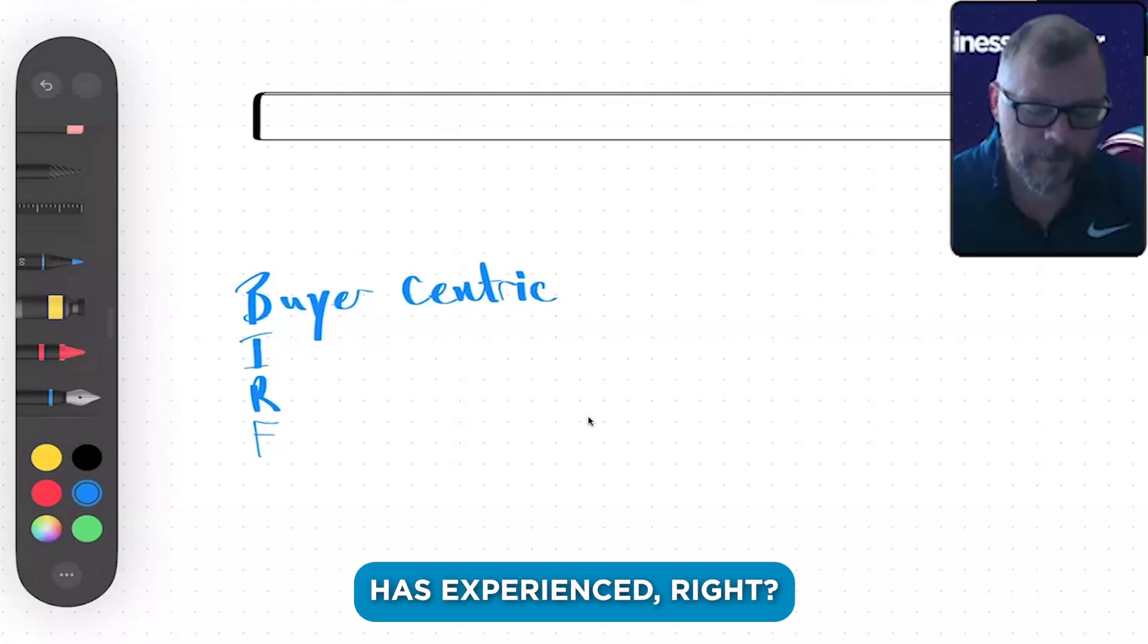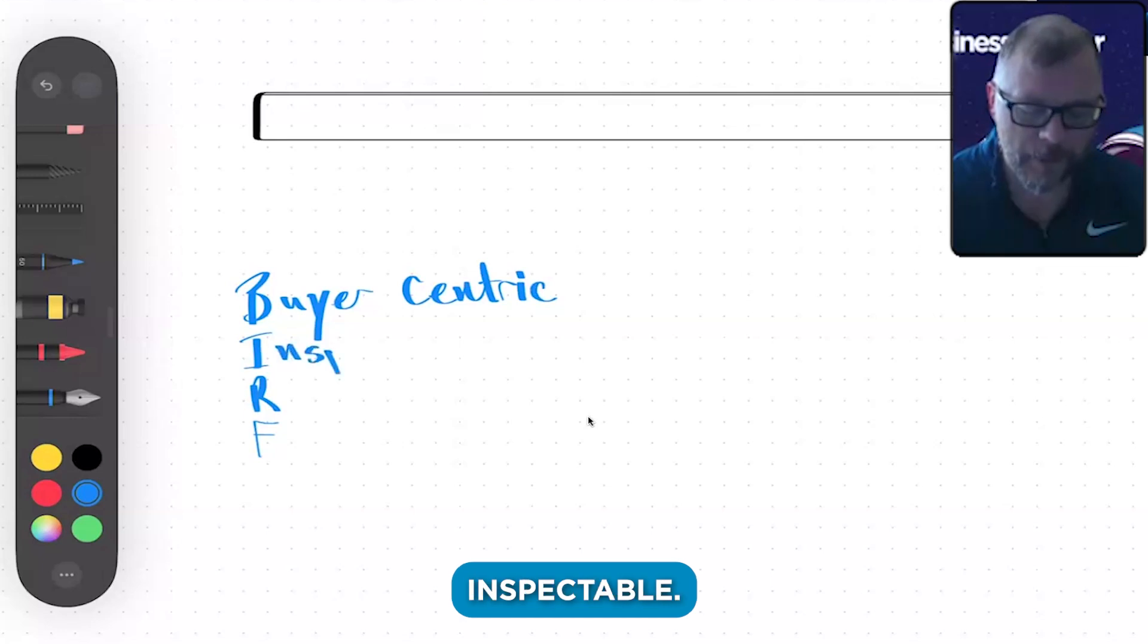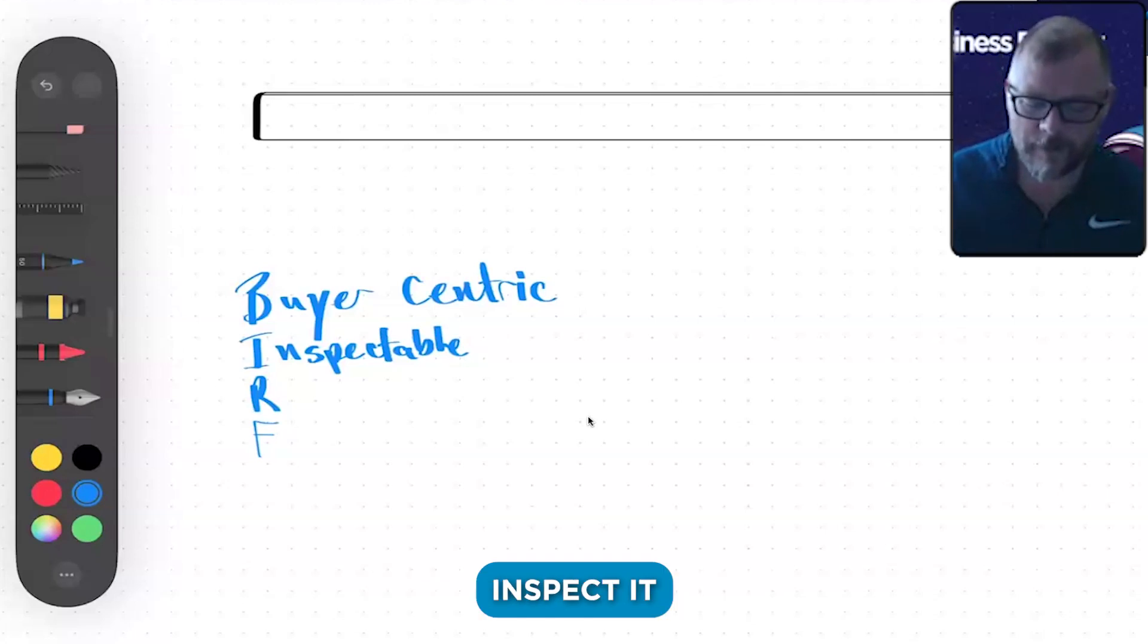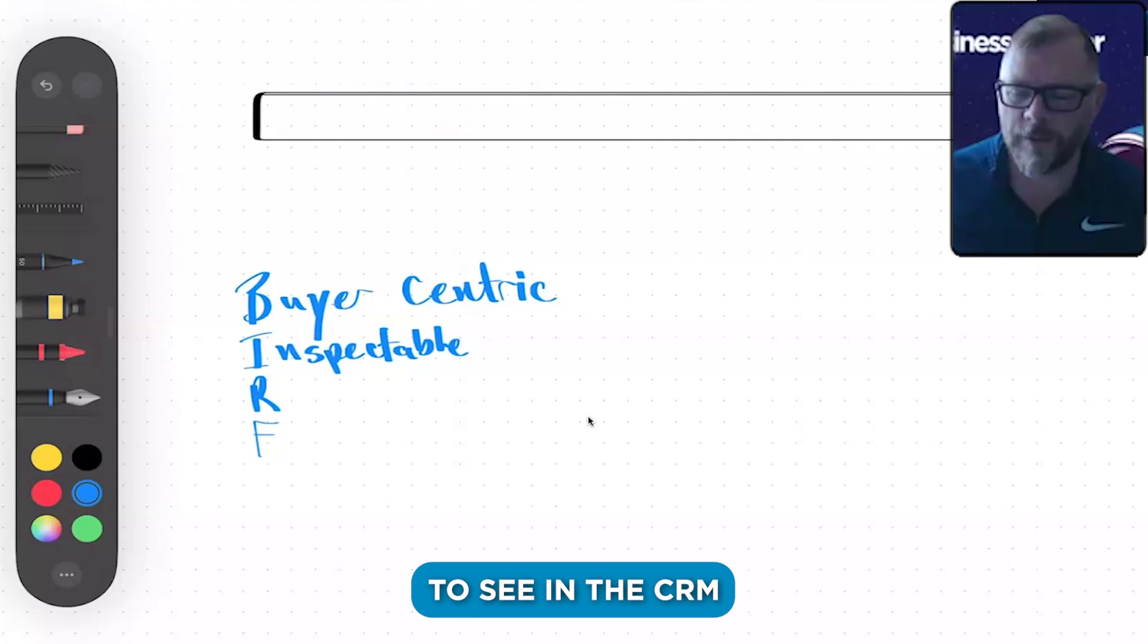It should be inspectable. Based on whatever deal stages we name, we should be able to inspect it and see why it's in that stage. If we're going to create a stage, we should be able to see in the CRM exactly why it's there, usually based on properties and data, not notes and emails and calls.